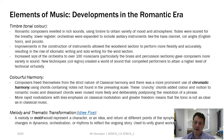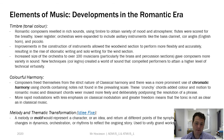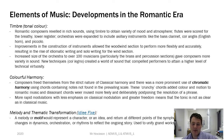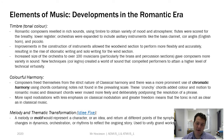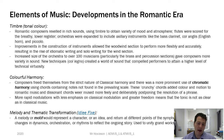With greater techniques and harder music, performers needed a higher level of technical virtuosity. Many composers also felt confined by Classical harmony's tonal structure, and there was a more prominent use of chromatic harmony — using chords that contain notes not found within the prevailing scale. These crunchy chords added colour and motion to Romantic music, and dissonant chords were used more freely and deliberately, postponing the resolution of a phrase. Music is always about the dichotomy between tension and resolution, or dissonance and consonance — the longer you can avoid resolving something, the more tension you build for your audience — and chromatic chords were how Romantic composers achieved that.